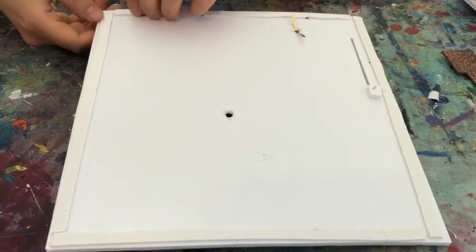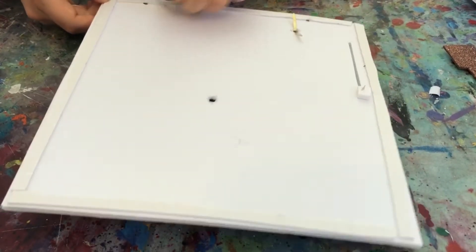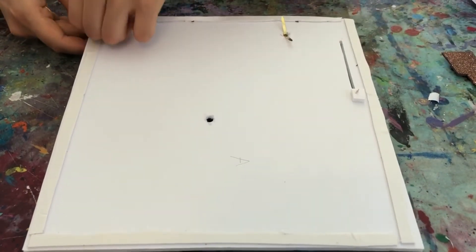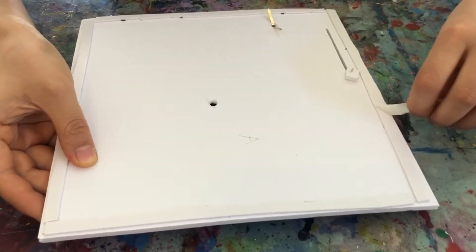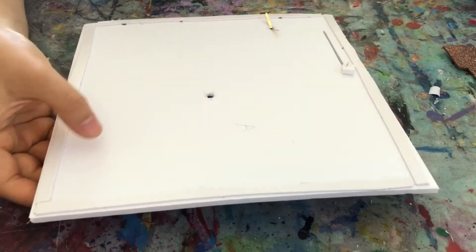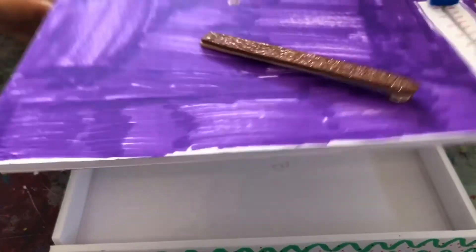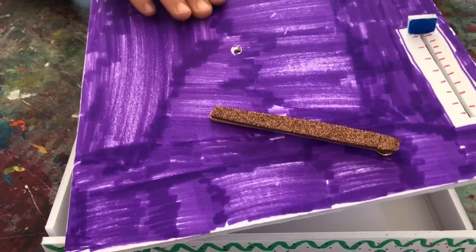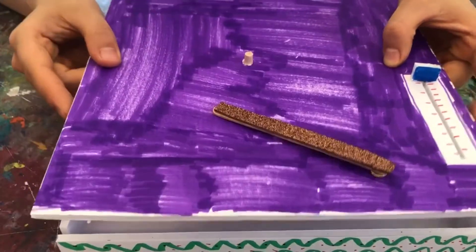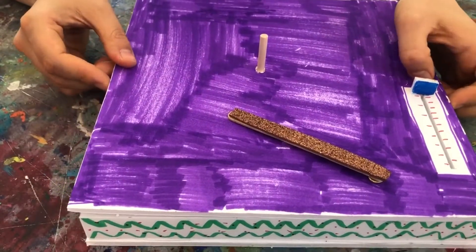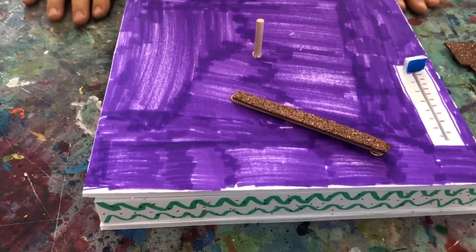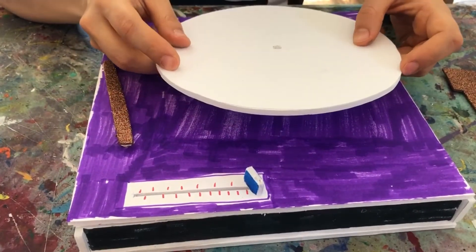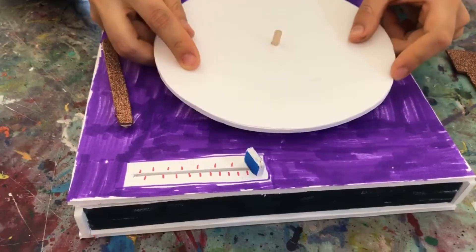Now peel off the double-sided tape backing of your A piece. Then you're going to place it on top of your B piece with the C and D sides, and gently push the wooden dowel through the hole on the A piece and press it down. Place one of your circle E pieces in the center.